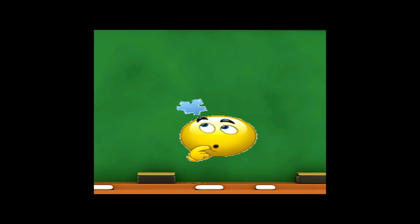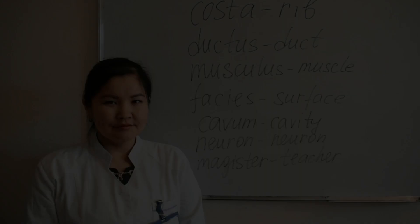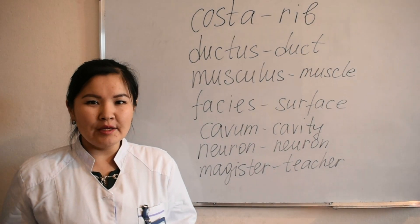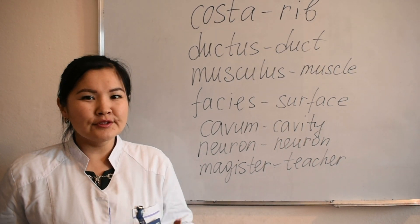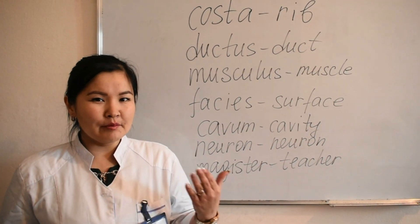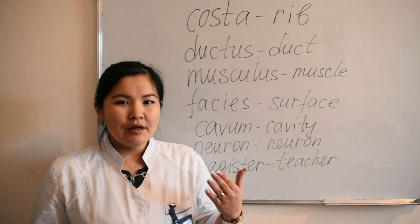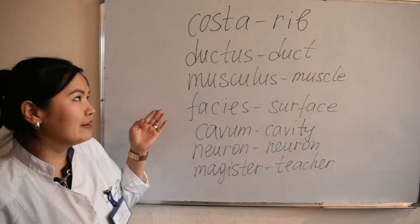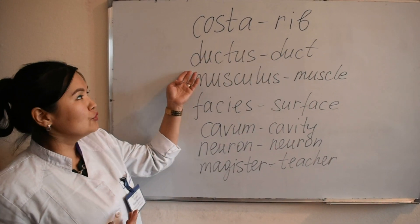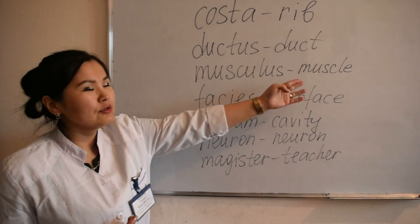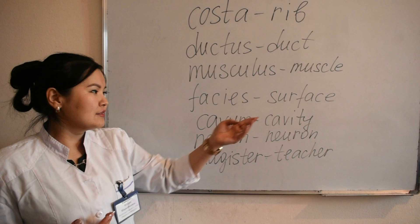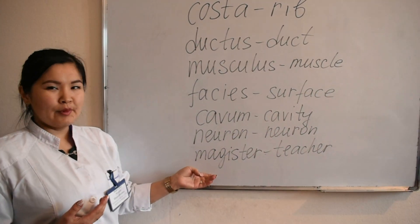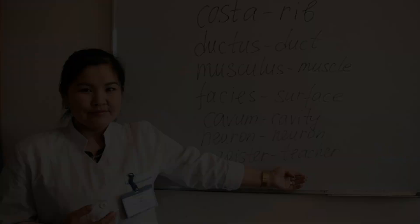Question: What is a noun? As you know, a noun is a part of speech which is used to name things, objects, and places. As we are studying medicine, our nouns will name structures of the human body. Look at the examples of Latin nouns: costa – rib, ductus – duct, musculus – muscle, facies – surface, cavum – cavity, neuron – neuron, and magister – teacher.